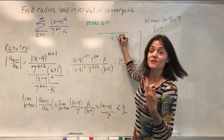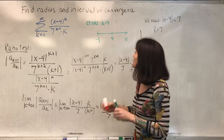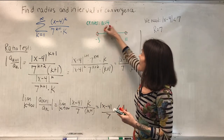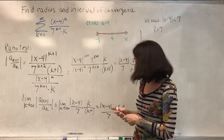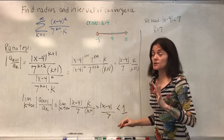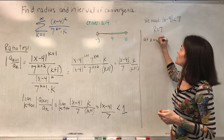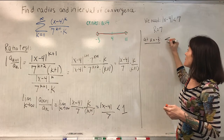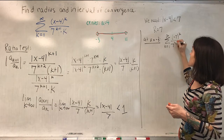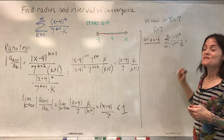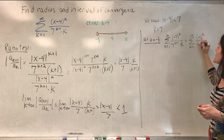Moving 7 in each direction from the center 4 gives endpoints 11 and −3. So far the interval is (−3, 11), but I need to test the endpoints and I know the series diverges outside this interval. At x = −3 we have the sum from k=1 to infinity of (−7) to the k over 7 to the k+1 times k, which simplifies to (−1) to the k over 7k.